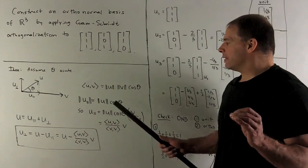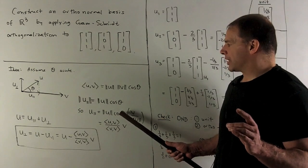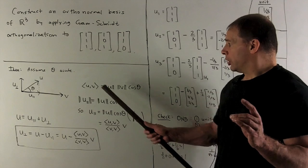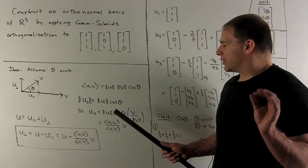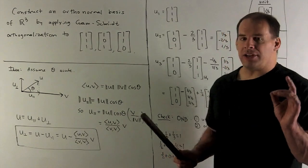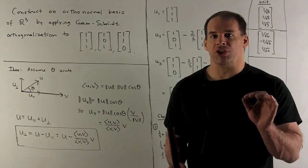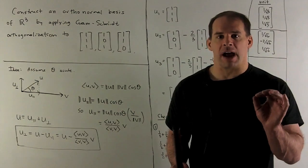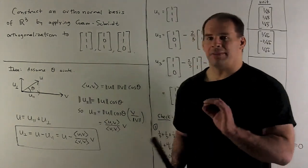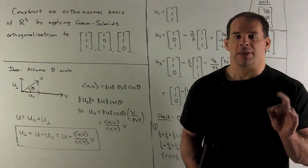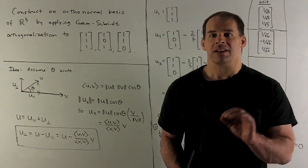So that means the length of u_parallel is just going to be, I'm going to take out cosine theta. So that's going to give me u with v inner product over the length of v. So that's our length. All I need to do now is multiply by the direction. Now, we don't know if v is a unit vector or not. So I'm going to change it to a unit vector, and that's going to give us our direction. So the direction is going to be v divided by the length of v. This gives us our decomposition of u_parallel as its length times its direction.